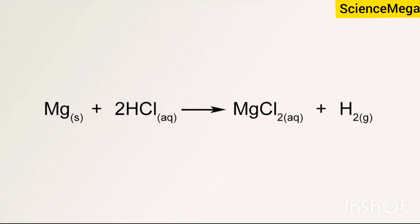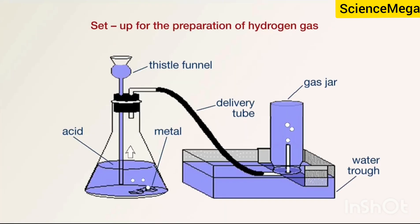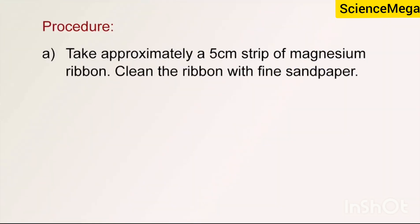The setup for the activity is shown on your screen. First of all, take approximately a 5 centimeter strip of magnesium ribbon. Clean the ribbon with fine sandpaper, then fold the ribbon and place it in the conical flask.